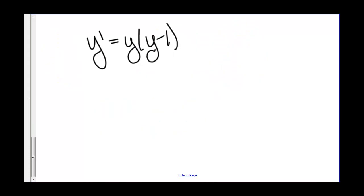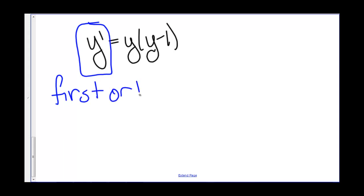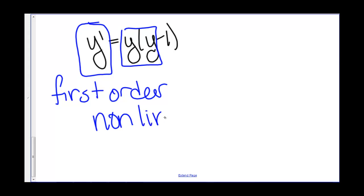In this example, y prime equals y times (y minus 1). We have y prime, so that's first order. Then we have y times y, so that's going to give us y squared, which is not linear — so this is non-linear.